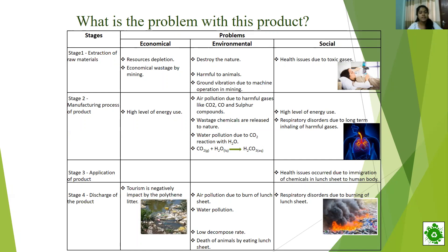Regarding environmental problems in stage two, we can see air pollution due to harmful gases like carbon dioxide, carbon monoxide and sulfur compounds, pollution due to releasing waste chemicals, and water pollution due to the reaction of carbon dioxide with water. Using high levels of energy also causes diseases, and long-term inhaling of harmful gases causes respiratory disorders. These are the social issues.